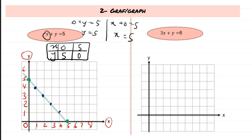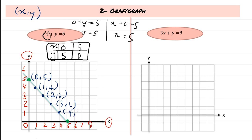Any point that lies on the line is a possible pair of solution. Writing in coordinate form: (0, 5), (1, 4), (2, 3), (3, 2), (4, 1), and (5, 0). You can name more than two pairs of possible solutions.